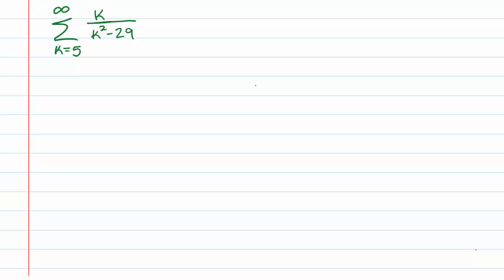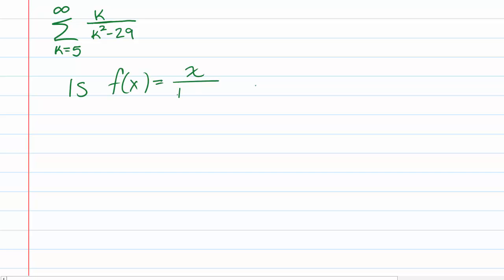We'd like to use the integral test to determine if the sum k equals 5 to infinity of k over k squared minus 29 converges or diverges. First we need to show that the hypotheses of the integral test are satisfied. The first question is: is f of x equals x over x squared minus 29 continuous?